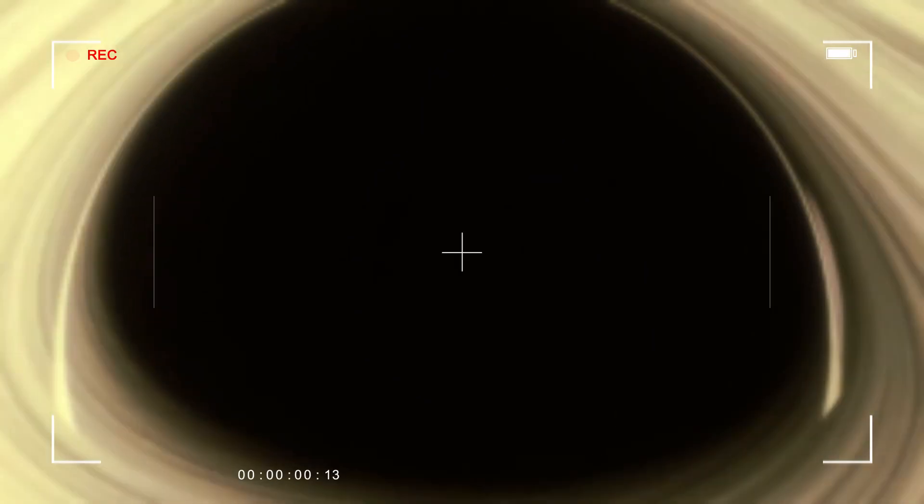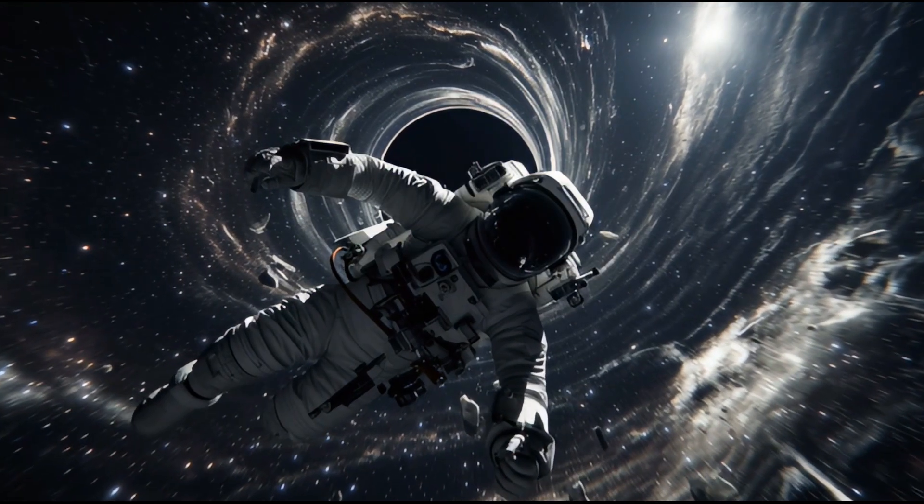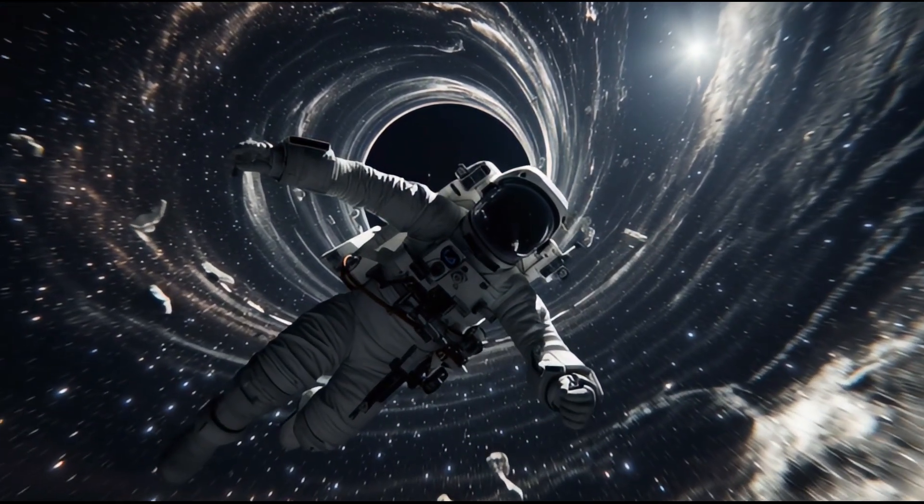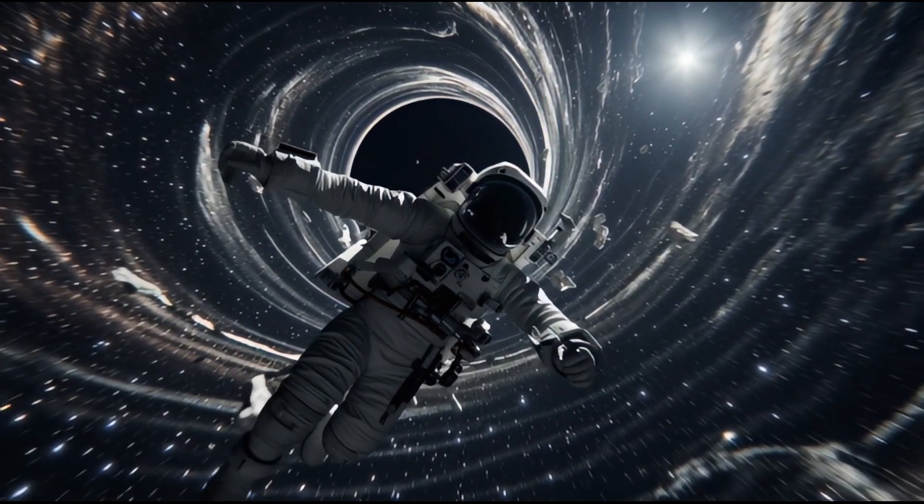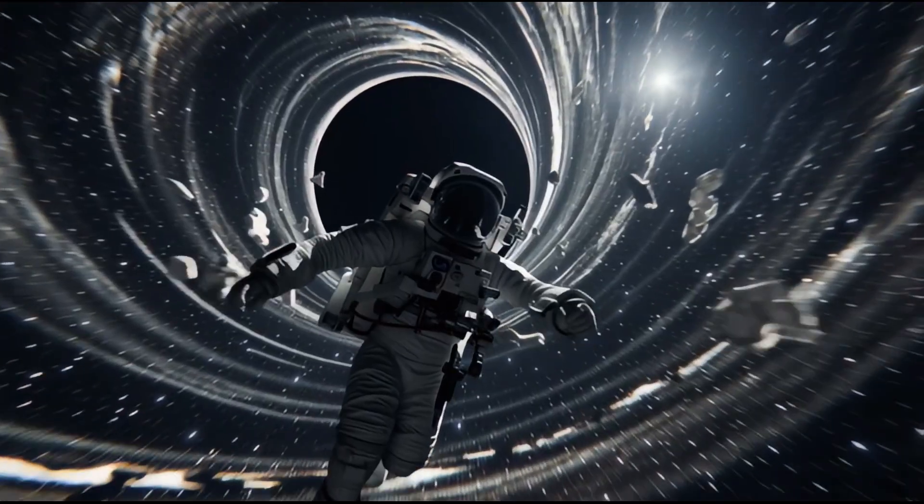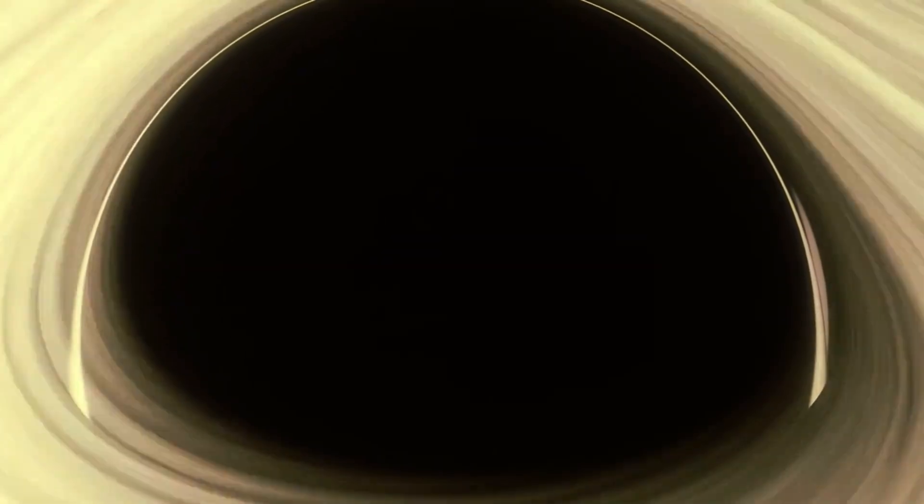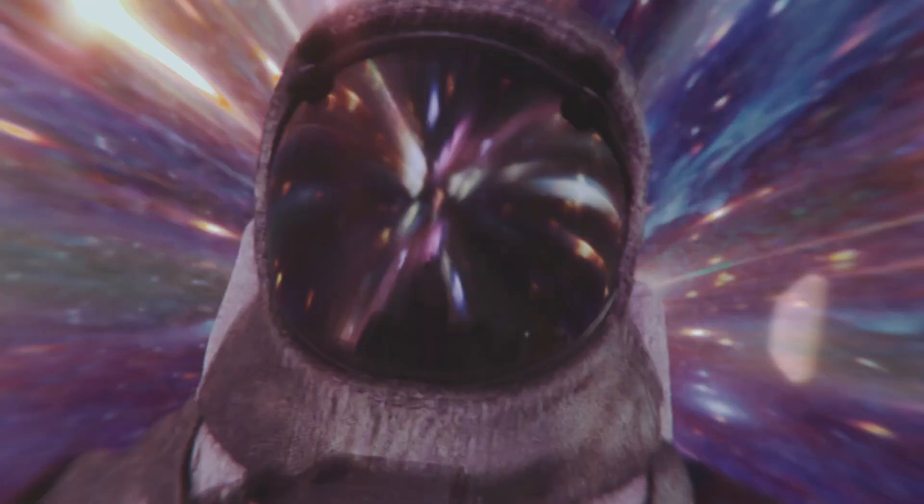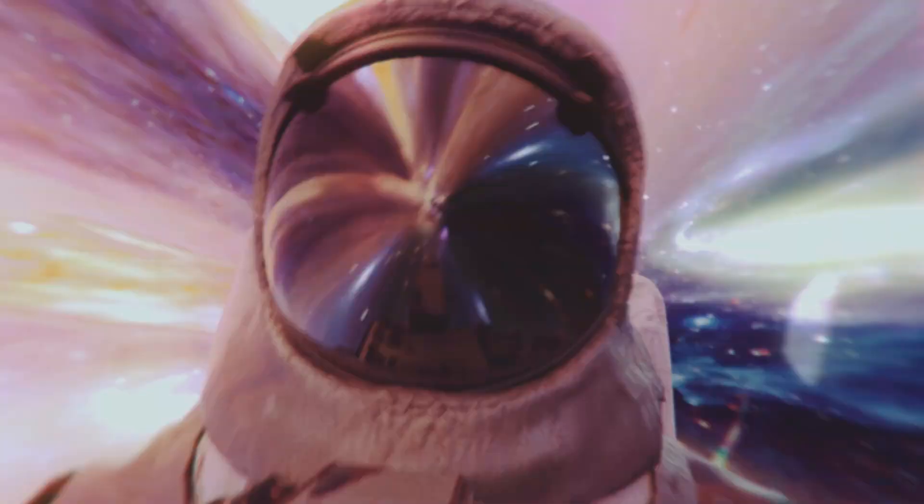Here's what happens. Imagine you're an astronaut who's had a really bad day, and you're falling feet first toward a stellar mass black hole. The gravitational pull at your feet becomes significantly stronger than at your head. We're talking about tidal forces so extreme that for a 10 solar mass black hole, by the time you're about 1,000 kilometers from the event horizon, the difference in gravitational pull between your feet and head would be thousands of times Earth's surface gravity.